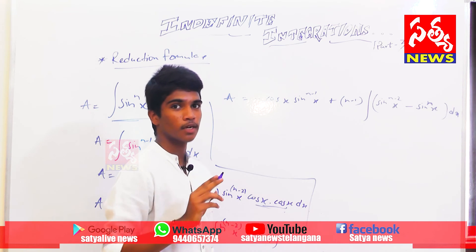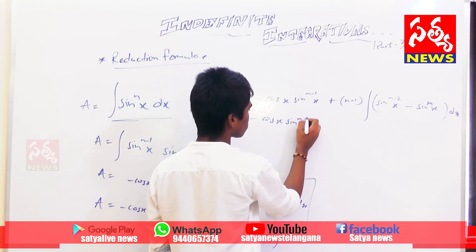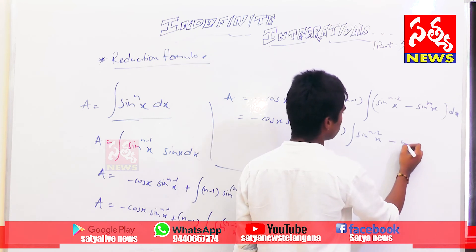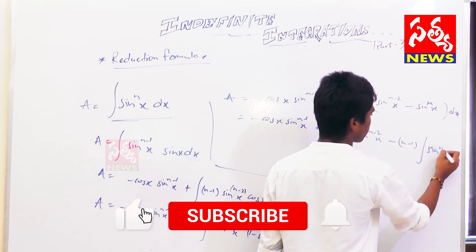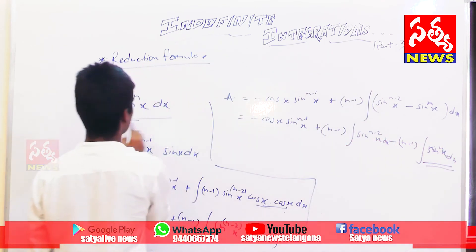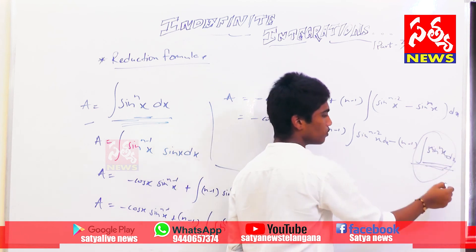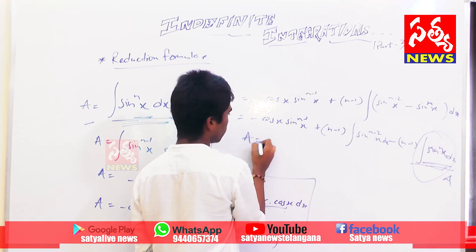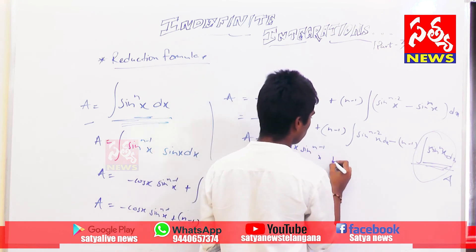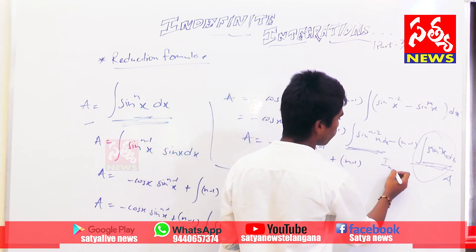Separating the integration: (n-1) times integration of sin^(n-2)(x) minus (n-1) times integration of sin^n(x) dx. The integration of sin^n(x) is I_n — the same as what we defined at the start — so in place of that we can write I_n.